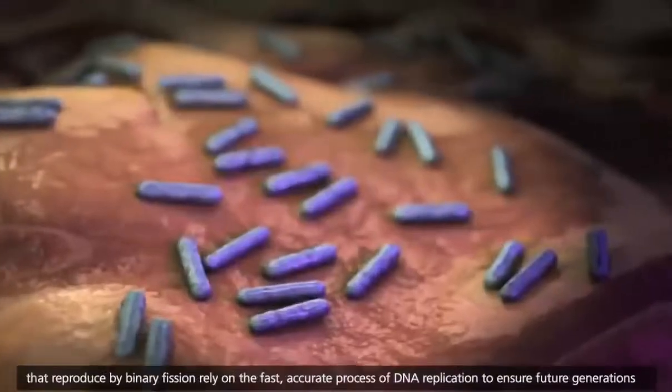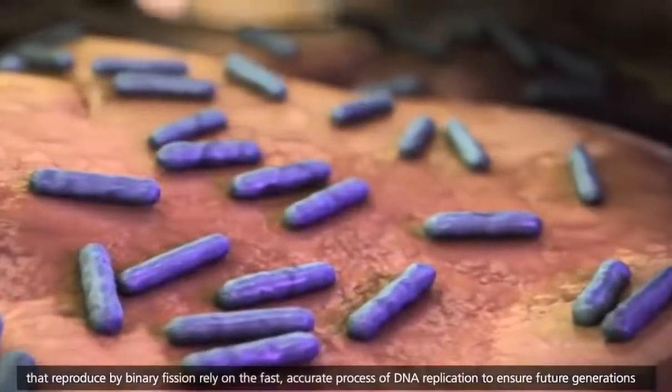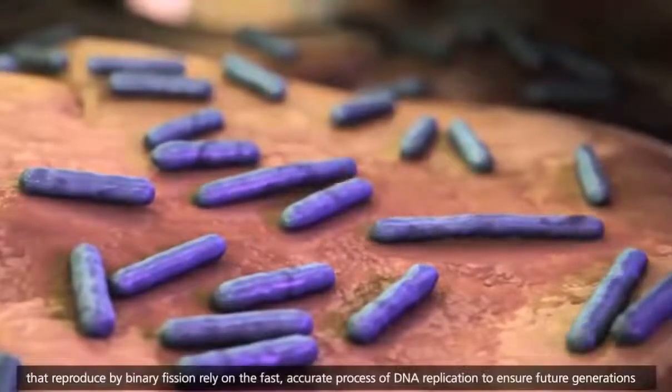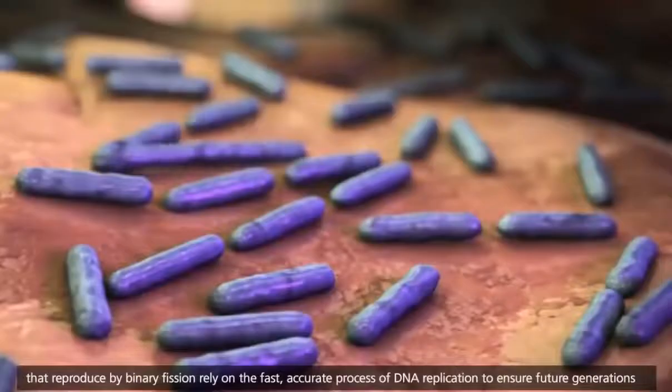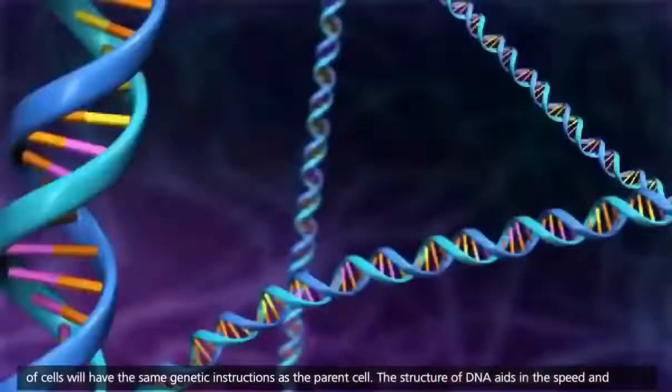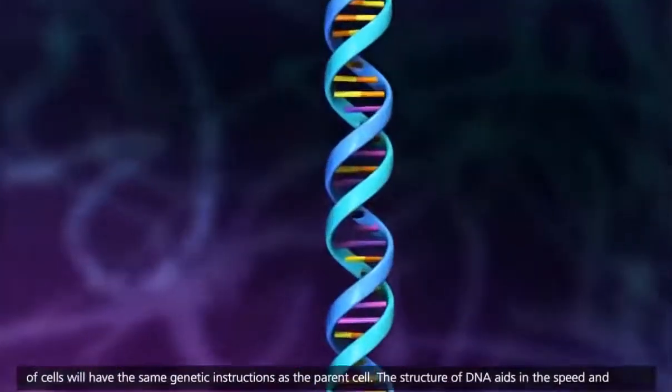Prokaryotic cells that reproduce by binary fission rely on the fast, accurate process of DNA replication to ensure future generations of cells will have the same genetic instructions as the parent cell.